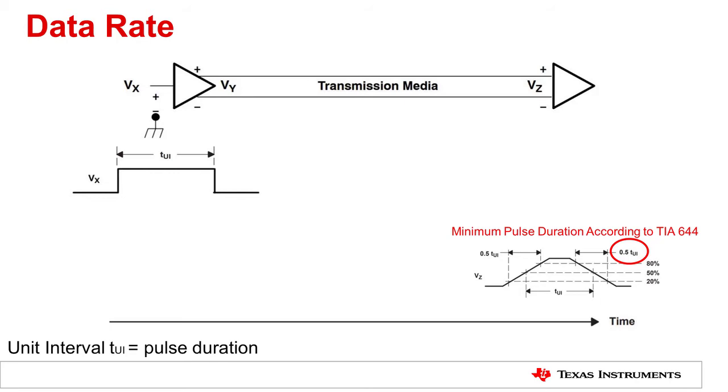When evaluating the data rate capability of the driver and receiver, a lossless line is assumed, and the 0.3 UI limit is applied to the driver and receiver circuit, which allows for losses in the transmission media. This implies that the data rate capability of the driver and receiver circuit can be determined by their output rise and fall times.